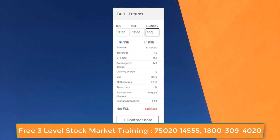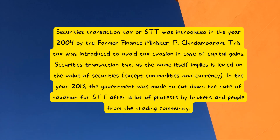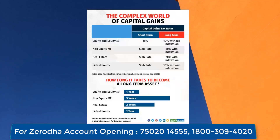A robust and liquid stock market is cardinal to our economy, and retail traders helping make this happen should also be helped. STT was originally introduced in 2004 by then Finance Minister P. Chidambaram to stop tax avoidance of capital gains tax. The government reduced this tax in the 2013 budget after protests by brokers and the trading community. At that point, only a few traders used to pay LTCG tax, so to bring all traders under the net the government introduced STT. However, today both exist parallelly and the government is earning revenue from both LTCG and STT.